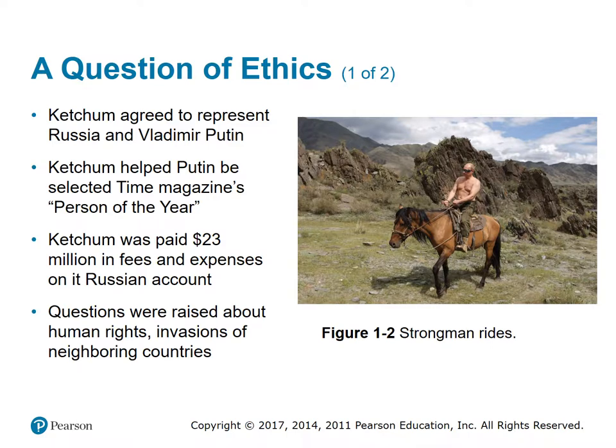A question of ethics: Ketchum agreed to represent Russia and Vladimir Putin. Ketchum helped Putin be selected as Time magazine's Person of the Year. Ketchum was paid $23 million in fees and expenses on the Russian account. Questions were raised about human rights and invasions of neighboring countries. Ever since Vladimir Putin became president of Russia in 2000, he has been critical of US imperialism while pushing the boundaries of Russia's power. Some people wondered whether it was the right thing to do when Ketchum, a well-respected public relations agency, agreed to represent Russia and its president to influence public opinion.